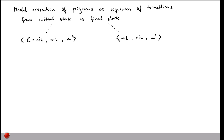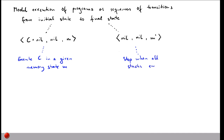This means we execute program C in memory state M, and stop when all stacks are empty. The question is how to get from the initial state to the final state. As you can guess, whenever we define a transition system, we define a set of transition rules. These rules will tell us how to get from an initial state to a final state — how to really execute a program in the SIMP language.